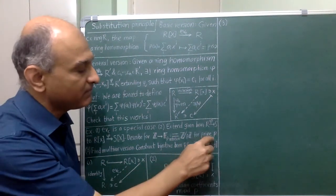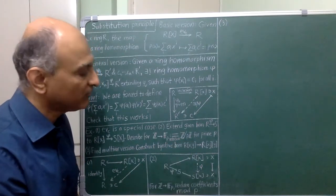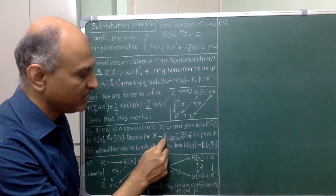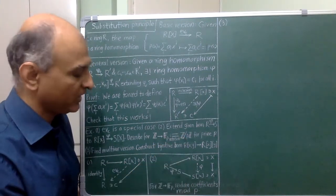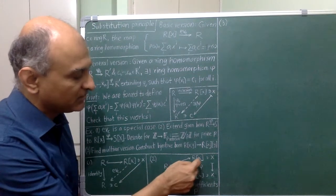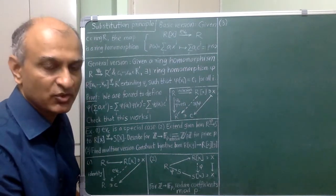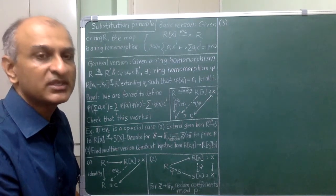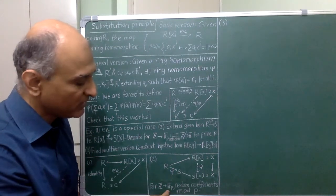Now, when p is a prime, I remember that this is a field and so, I will henceforth always denote it by F_p whenever I am regarding it as a ring. In this situation, the map that I have constructed simply amounts to taking the given polynomial with integer coefficients and reducing every coefficient modulo p to get a polynomial over F_p.